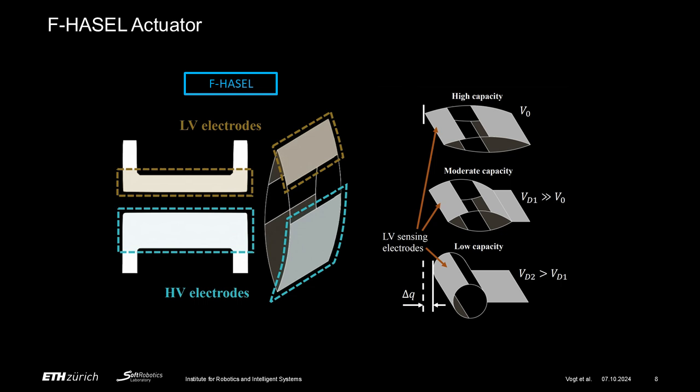We then apply a low-voltage signal exclusively across this additional pair of electrodes to notice this changing capacity. This pair of electrodes will be referred to as the sensing electrodes.